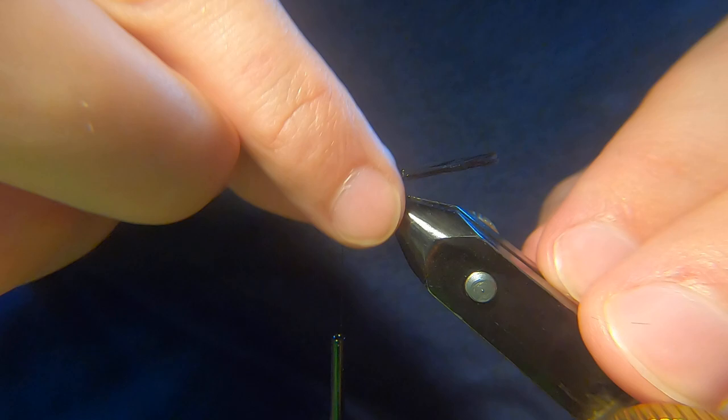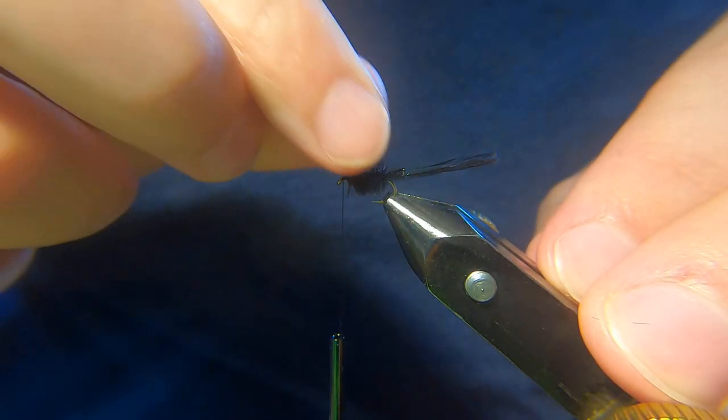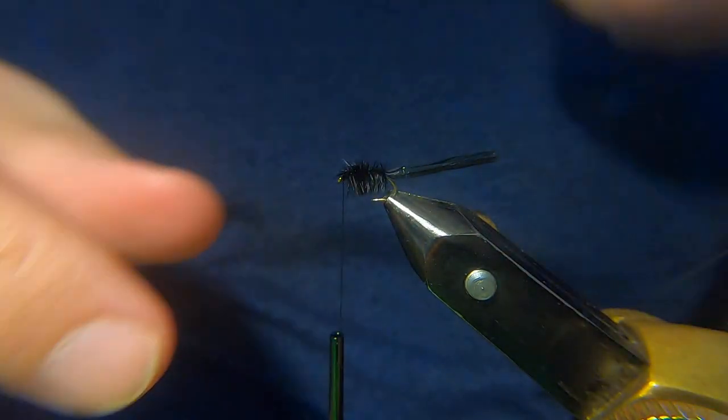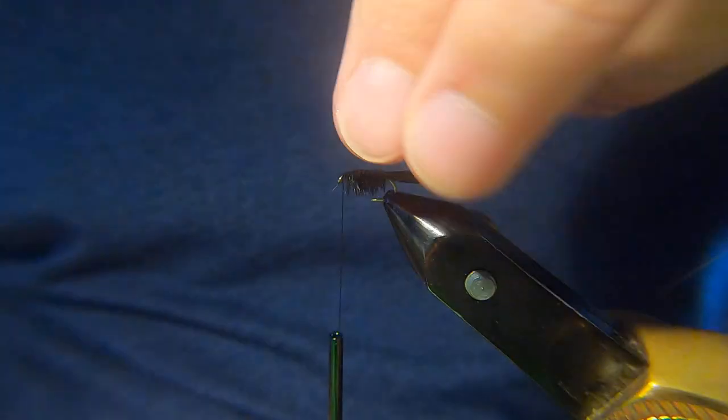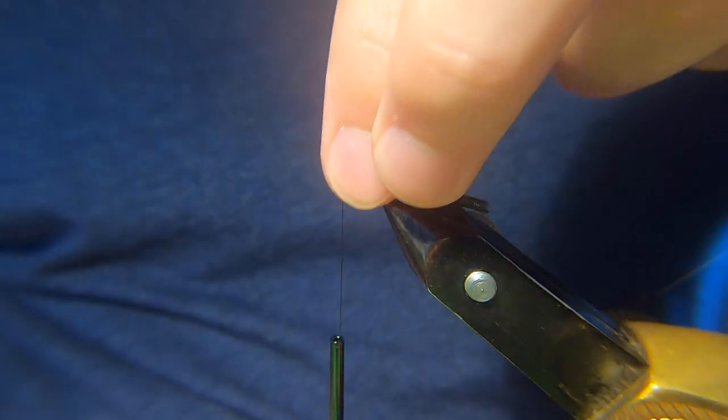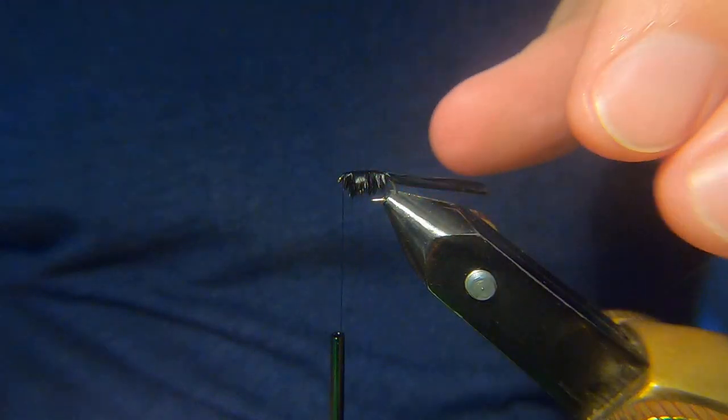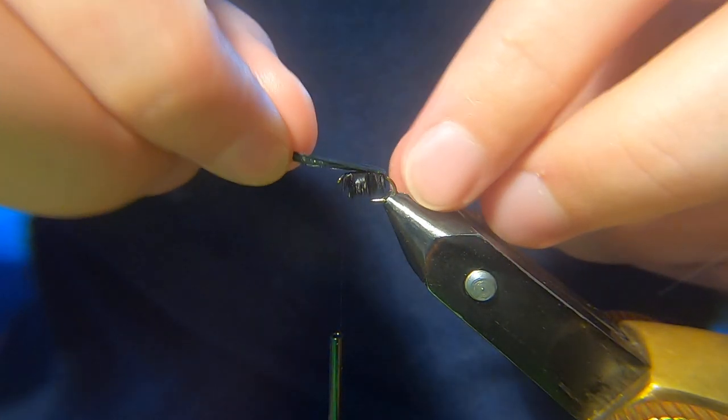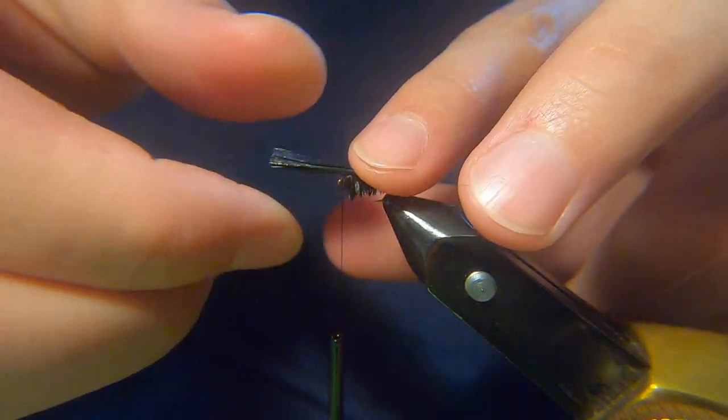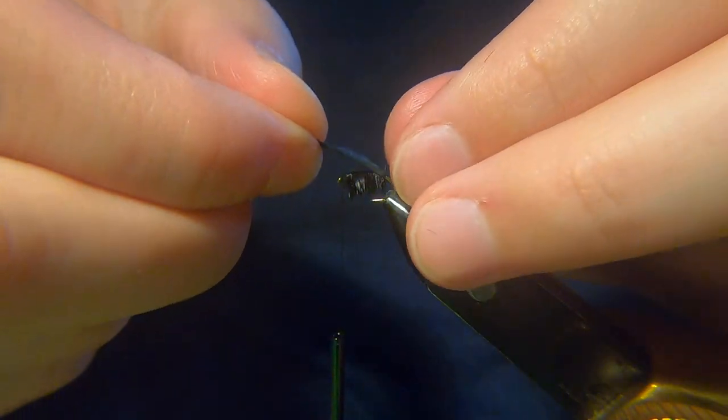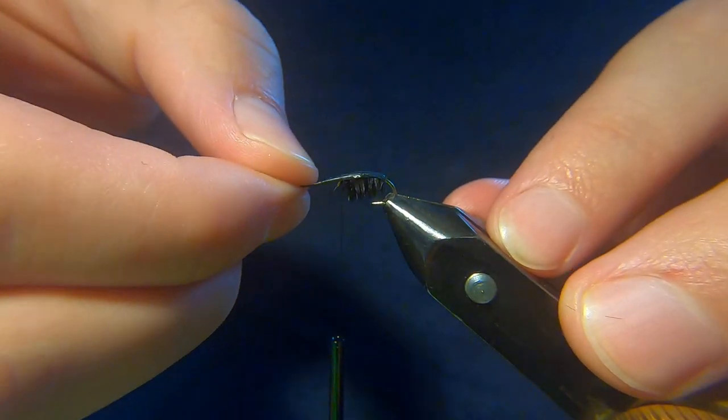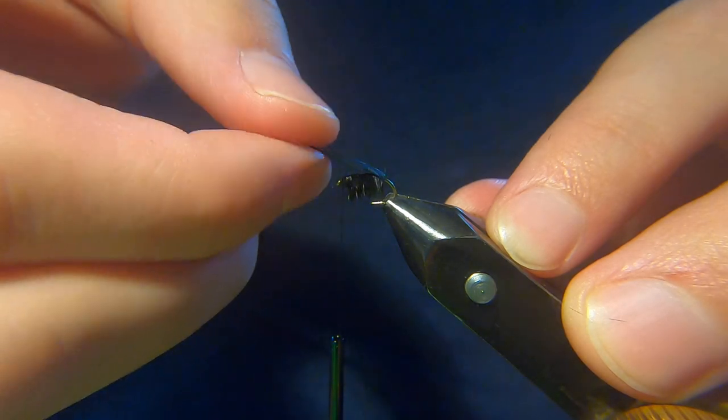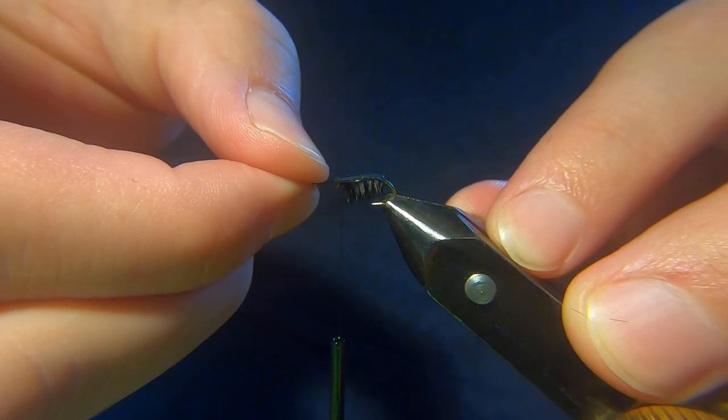And basically we'll just slick this stuff back down with your fingers. Slick it down, thumb and forefinger. Just like that. And then you bring your raffia over the back. You see what I mean about the raffia dictates the size. Where you place that.